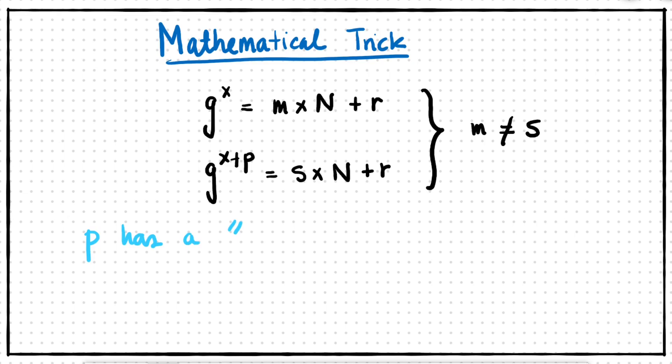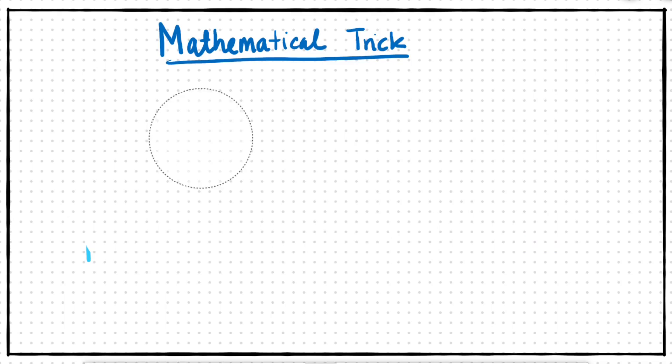What this means is that the power p we're trying to find has a special repeating property, in which if we take another power and add or subtract p to it, the remainder stays the same. The advantage of quantum computing is in the fact that the simultaneous operation on a superposition of different possible powers allows us to see this relationship between different powers.